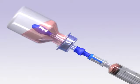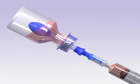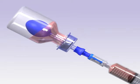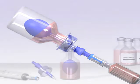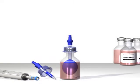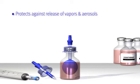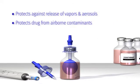To do additional withdrawals, simply swab the clave again and repeat your procedure. The Genie will inflate each time to equalize the pressure. The Genie protects against release of vapors and aerosols into the environment, as well as protecting your drug from airborne contaminants.